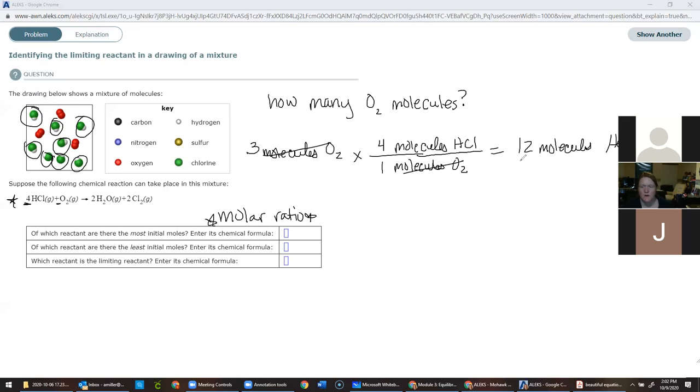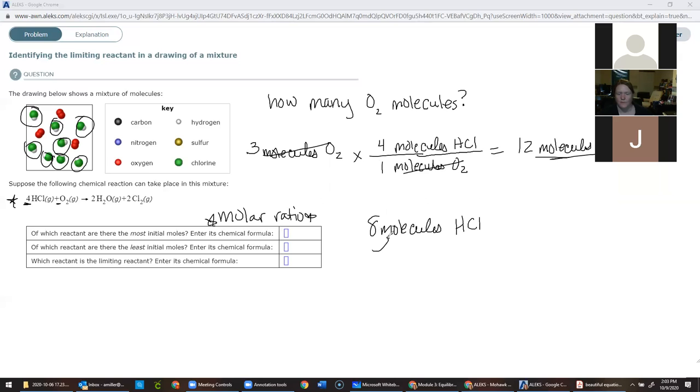So we have three molecules of O2. And I want to figure out how many, based on the balanced reaction, I want to figure out how many oxygens are needed to react with each HCl. So I'm going to use the molar ratio. The molar ratio comes from the balanced reaction, and it's just these coefficients. There's one oxygen and there are four HCl. So I need to have 12 molecules of HCl in order to do this reaction. So the question is, do we have 12? So we got one, two, three, four, five, six, seven, eight. So do I have enough HCl to react with all of the O2 that's there?